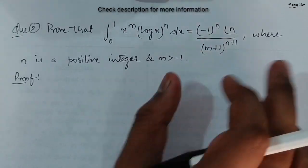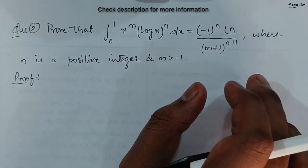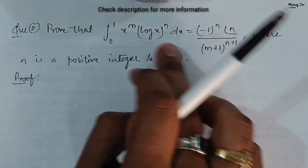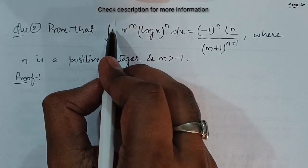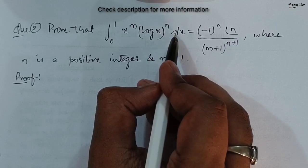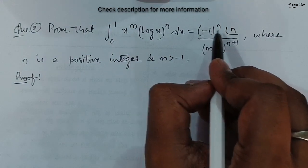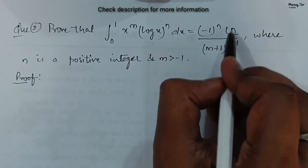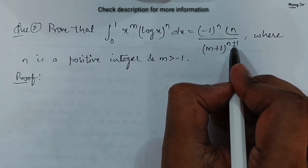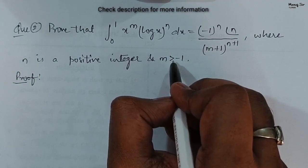In the previous video, that is video number 21, we found a relationship between beta and gamma function, which is very important. In this problem, we will prove that the integration with limit from 0 to 1 of x to the power m times (log x) to the power n dx equals minus 1 to the power n times n factorial upon (m+1) to the power (n+1), where n is a positive integer and m is greater than minus 1.